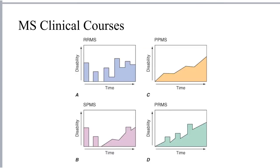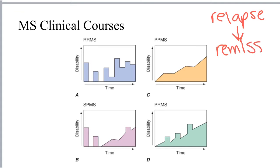MS can be subdivided into one of four categories of clinical course, which has to do with the pattern of relapse or exacerbation and then remission or disease-free periods. The most common clinical course at initial presentation is relapsing-remitting multiple sclerosis, or RRMS. This is characterized by acute attacks or exacerbations with either full or partial recovery in between attacks, with typically no lasting disability or progression between attacks.